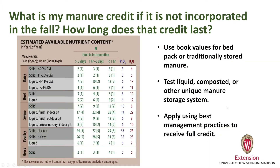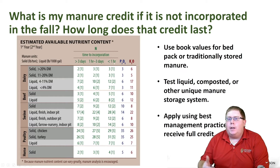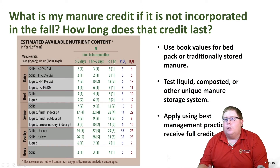So what is my manure credit if we're not incorporating the manure, and how long does that credit last? We want to use the book values for bed pack or traditionally stored manure — shown in the chart on the left-hand side of the screen. The chart covers dairy, beef, swine, poultry, and horse manure, with liquid versus solid manure indicated. At the top, time to incorporation is shown — greater than three days, one hour to three days, and less than one hour — such as when injecting or immediately chisel plowing after spreading.